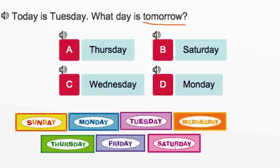And once you reach Saturday, you just start from Sunday again, where you then go to Monday, Tuesday, Wednesday, Thursday, Friday, and then Saturday — where you then start all over again and the cycle continues.